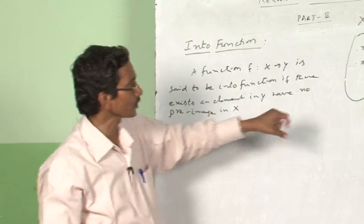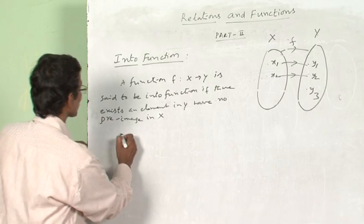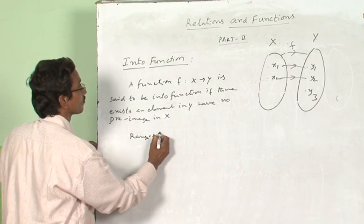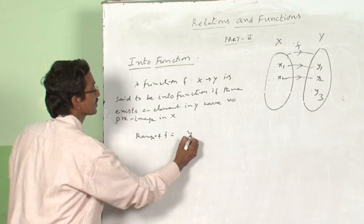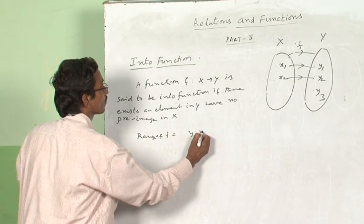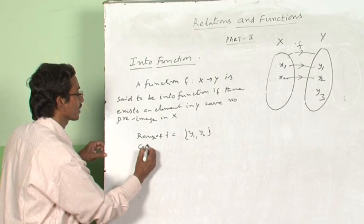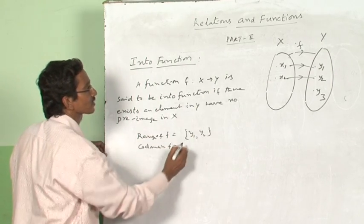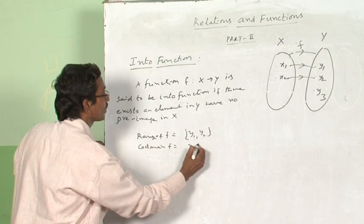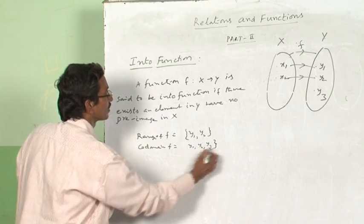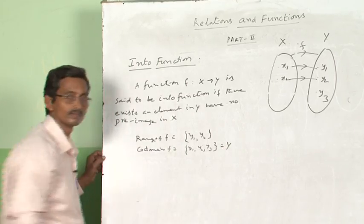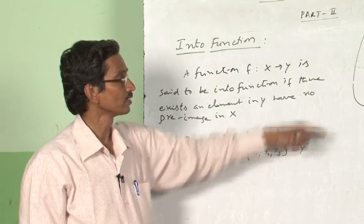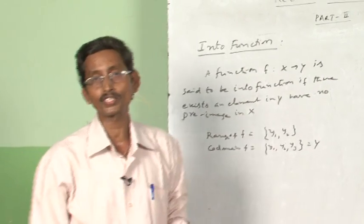Now clearly, intuitively, tell me what is the range of the function? The range of F is {Y1, Y2}. What is the co-domain of the function? The co-domain of the function is {Y1, Y2, Y3}, which is equal to set Y. So the range of F is a proper subset of set Y.